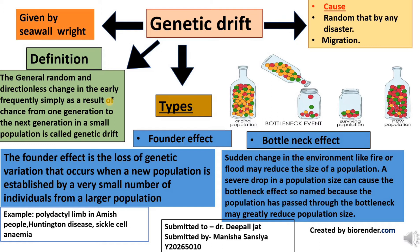Consider a population of rabbits with brown fur and white fur, white fur being the dominant allele. Due to genetic drift, only the brown population might remain with all the white ones eliminated. Another example is a couple with brown and blue eyes having children — even if there is a 50% chance of having blue eyes, brown eyes being the dominant allele, all the children might have brown eyes in the future generation as a matter of chance.